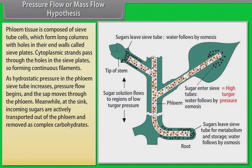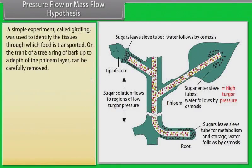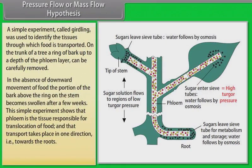As hydrostatic pressure in the phloem's sieve tube increases, pressure flow begins and the sap moves through the phloem. Meanwhile, at the sink, incoming sugars are actively transported out of the phloem and removed as complex carbohydrates. The loss of solute produces a high water potential in the phloem and water passes out, returning eventually to the xylem. A simple experiment called girdling was carried out to identify the tissues through which food is transported. On the trunk of a tree, a ring of bark up to the depth of the phloem layer is carefully removed. In the absence of downward movement of food, the portion of bark above the ring becomes swollen after a few weeks, showing that phloem is responsible for translocation of food and that transport takes place towards the roots.